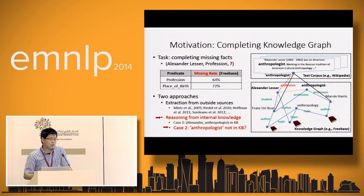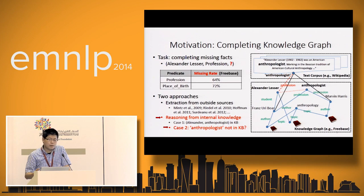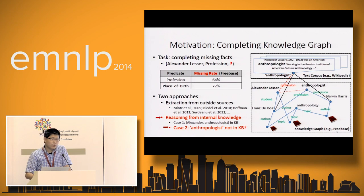The research is motivated by the task of completing missing facts for the knowledge graph such as Freebase. For example, the profession of Alexander is missing — how to fill this missing value. This task is pretty critical for industry. In Freebase, there are more than 60% of people with no profession, and more than 70% of people with no place of birth. It's pretty common among almost all the predicates.